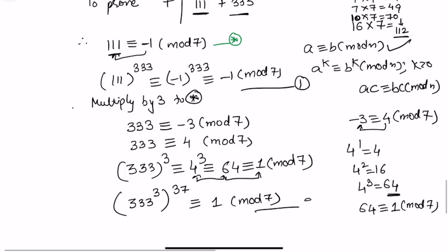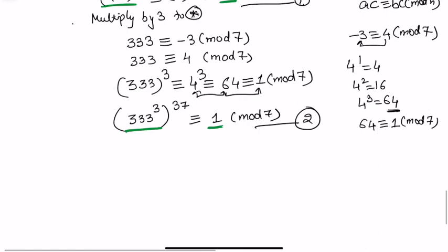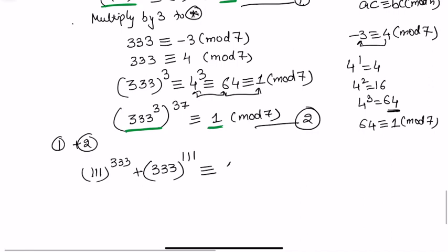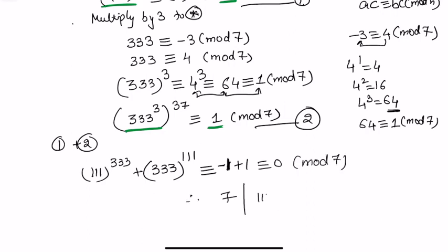Now we label these as congruences 1 and 2. Adding congruences 1 and 2, the left-hand side gives 111^333 + 333^111. On the right-hand side, we got -1 from the first and +1 from the second, which sum to 0 modulo 7. Therefore 7 divides 111^333 + 333^111, which proves it is divisible by 7.